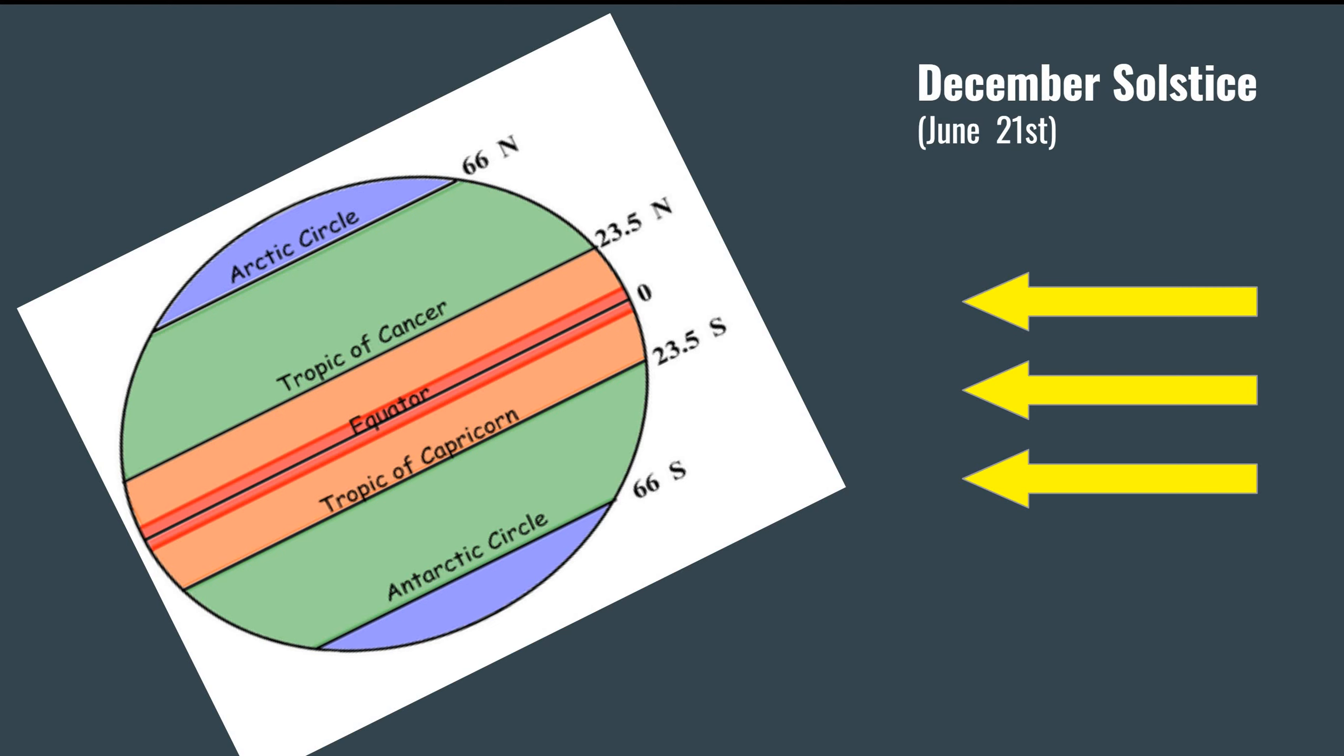And this diagram just shows the exact opposite. So December solstice is when the Antarctic areas in the Antarctic region receive the most sunlight and areas in the Arctic Circle receive the least.